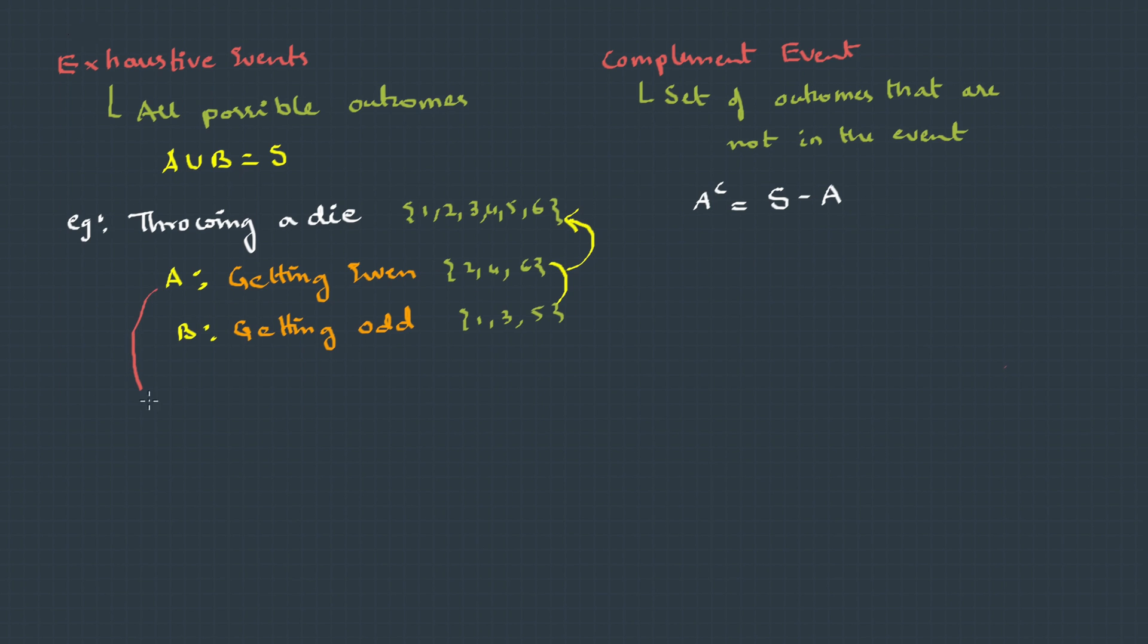Here A is getting an even number. So for this, we can define A complement, which is the sample space minus A. That is from the sample space, remove 2, 4 and 6. The leftover elements are 1, 3 and 5, which becomes the complement of this.